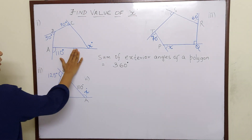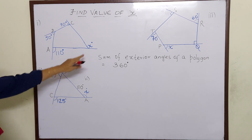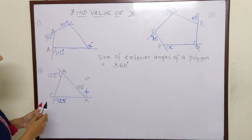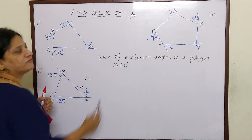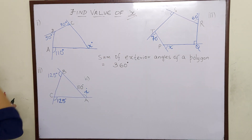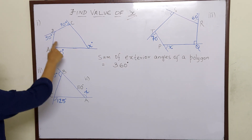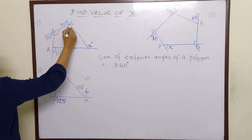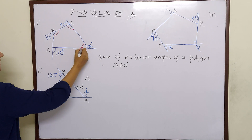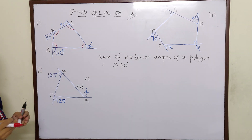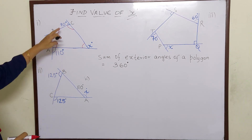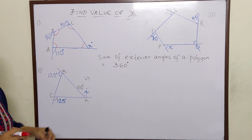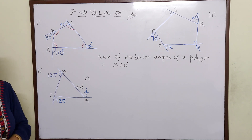Now if you look closely at this figure, x is here which is an exterior angle and they have asked us to find the value of x. So if you see, these are 4 lines, and the interior angles are these which I am marking with the red color. These are interior angles because they are inside the figure. And 90 degree, 50 degree, 110 and x — they are the exterior angles.